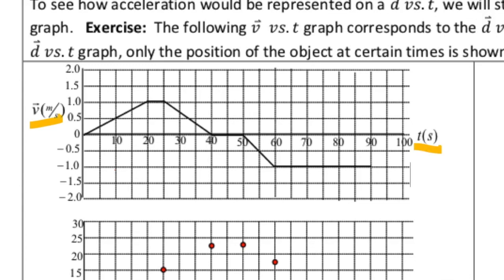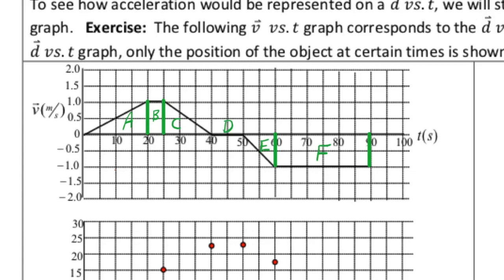We haven't talked about how these red dots were calculated yet — we're going to do that later in this video. First, we're going to analyze the motion on this V versus T graph. For clarity, we're going to break up this graph into distinct sections: 0 to 20 seconds, 20 to 25, 25 to 40, 40 to 50, 50 to 60, and 60 to 90 seconds. I'm going to label each of these sections A, B, C, D, E, and F.